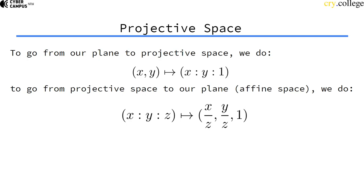So if we want to turn our affine coordinates x and y to projective space we can do that just by setting z to 1, and if we want to go from projective space back to affine space we have to divide our x and y coordinates by z.